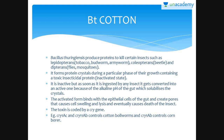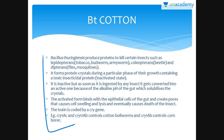Some strains of Bacillus thuringiensis produce proteins that kill certain insects such as lepidopterans present in tobacco budworm and armyworm, coleopterans present in beetles, and dipterans found in flies and mosquitoes. Bacillus thuringiensis forms protein crystals during a particular phase of their growth, and these crystals contain a toxic insecticidal protein.